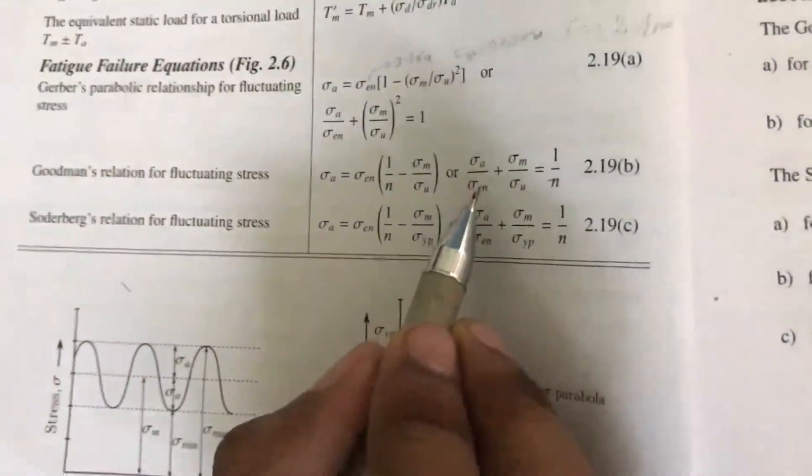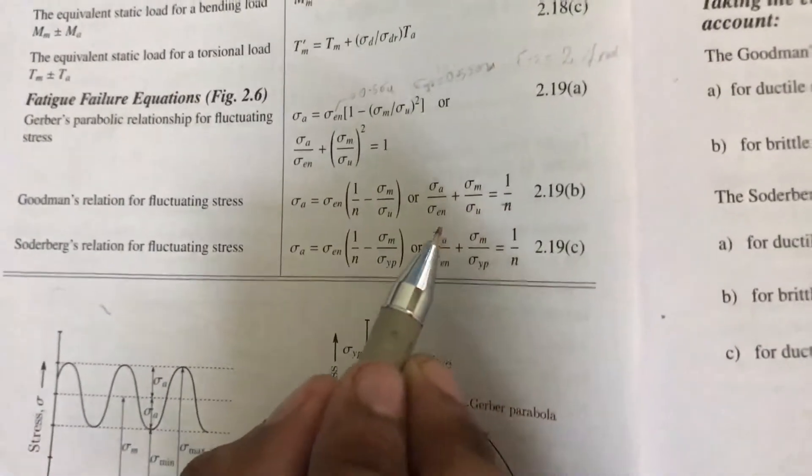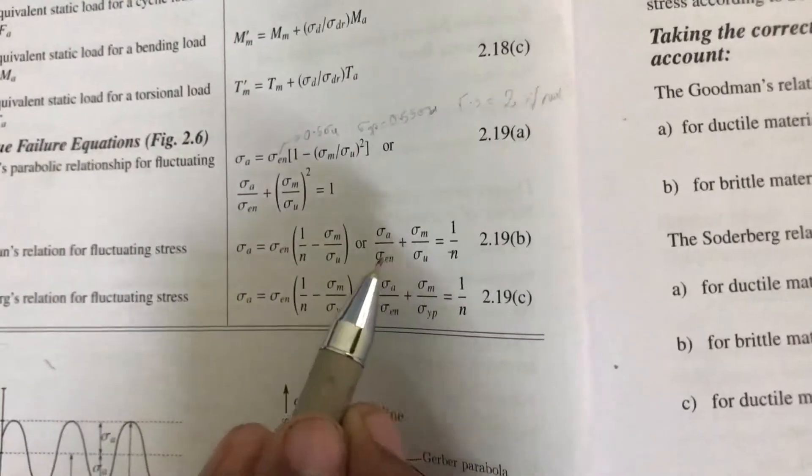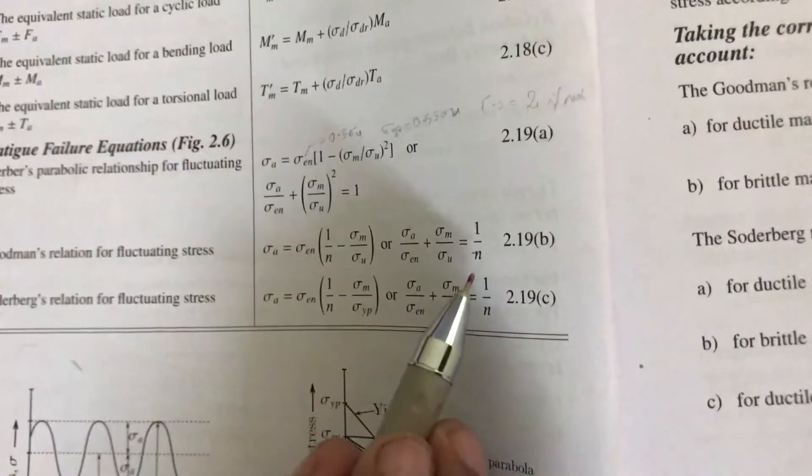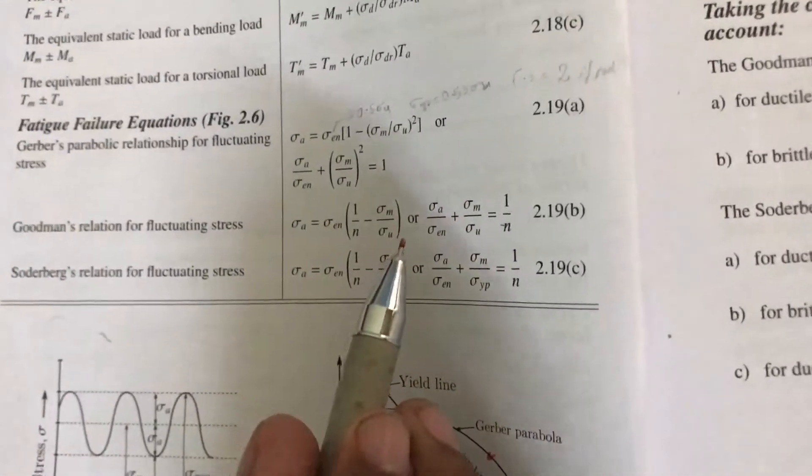Now if we are going for Goodman method, there we have sigma a by sigma en plus sigma m by sigma u equal to 1 by n. Here sigma en is 0.5 sigma u. Again sigma u is unknown. So the other things can be substituted. Factor of safety is 2, so we can find sigma u.